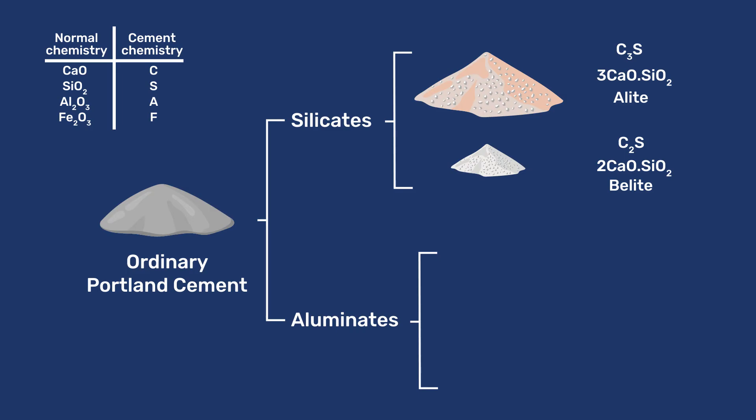The aluminate phases are tricalcium aluminate, 3-CAO·AL2O3, noted C3A in cement chemistry. There is also a calcium aluminate phase, 4-CAO·AL2O3·FE2O3, noted C4AF in cement chemistry, or better, C2(A,F), as it is a solid solution.